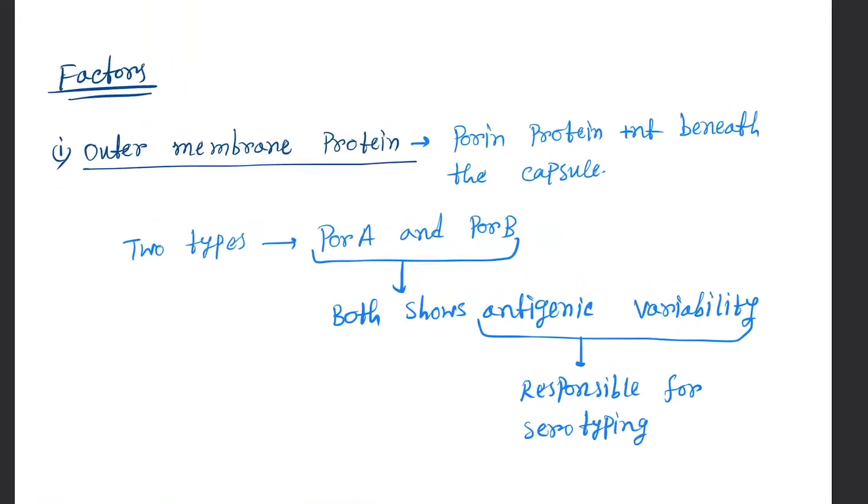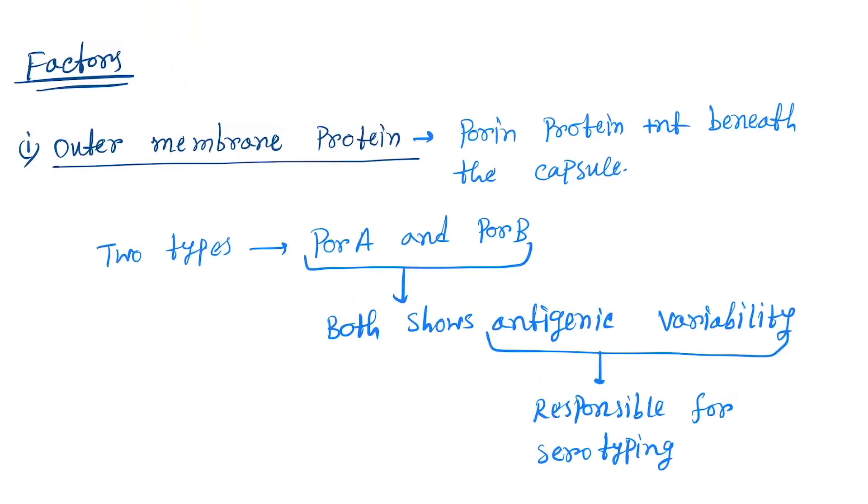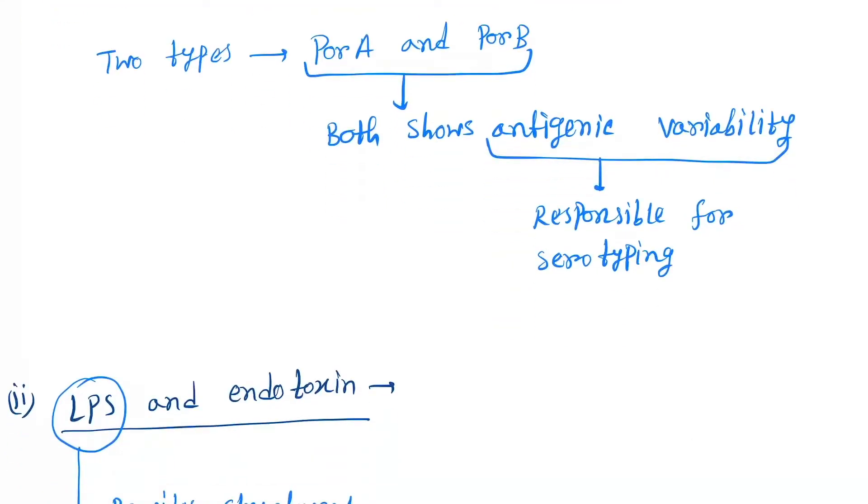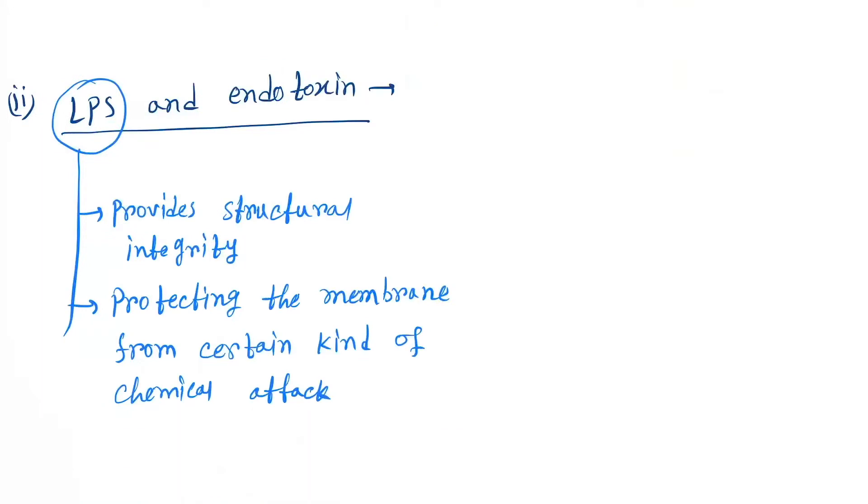Porin proteins present beneath the capsule. Two types: PorA and PorB. Both show antigenic variability, so different types of strains are produced, responsible for serotyping. Now LPS and endotoxin: LPS provides structural integrity, protecting the membrane from certain kinds of chemical attack.